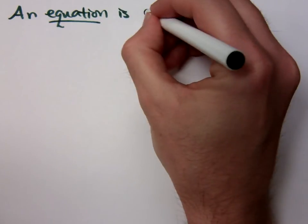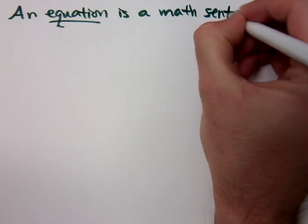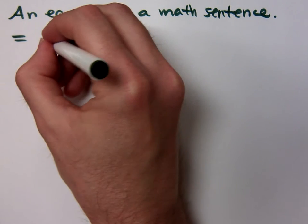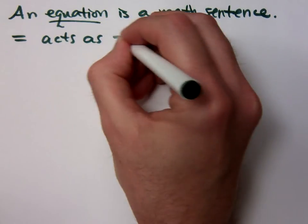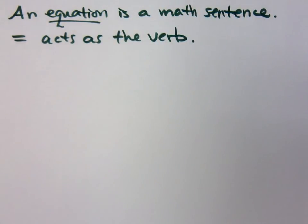And an equation is a math sentence. It has an equal sign already built into it. And that equal sign will act as the verb of your sentence. So, from a grammatical perspective, your equation is a sentence, and the equal sign is your verb that connects your subject and your predicate.